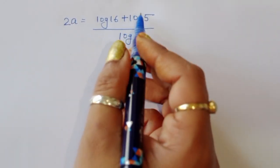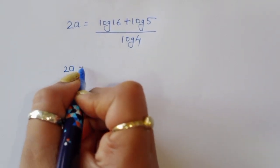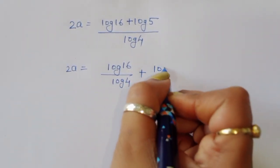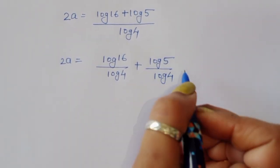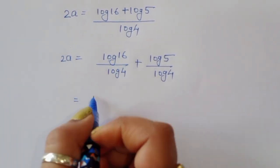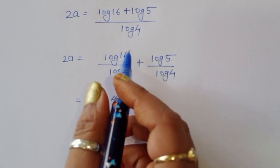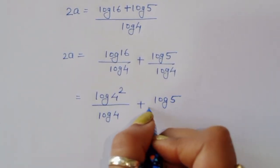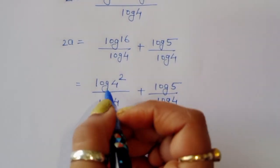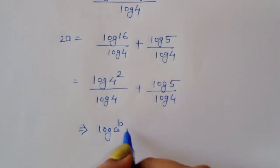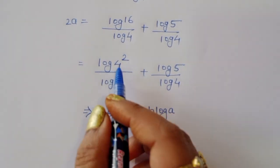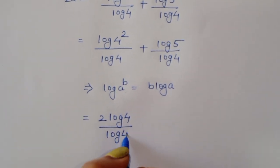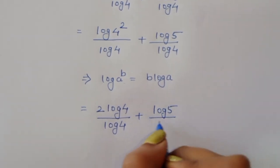So 2a is equal to log of 16 divided by log of 4, plus log of 5 divided by log of 4. Now log of 16 can be written as log of 4 squared divided by log of 4. Using the formula log of a power b equals b times log of a, this becomes 2 times log of 4 divided by log of 4, plus log of 5 divided by log of 4.